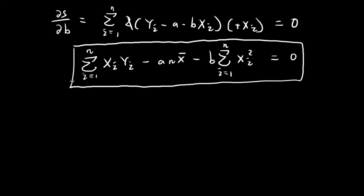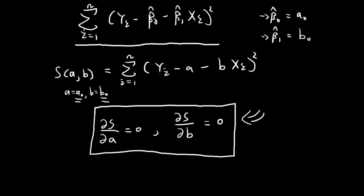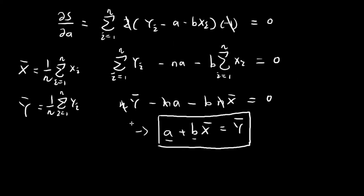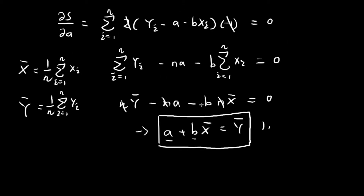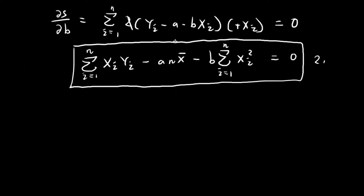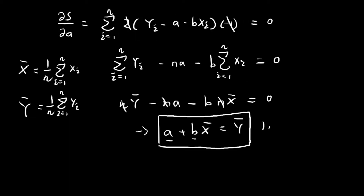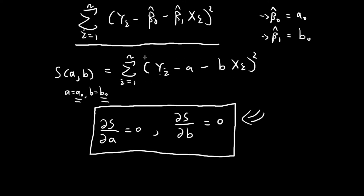So the values of A and B that minimize this function must satisfy both the first condition and this second condition. Now we have two unknowns, A and B, and two equations. So we can solve for A and B, and those values will be the ones that minimize the function S.